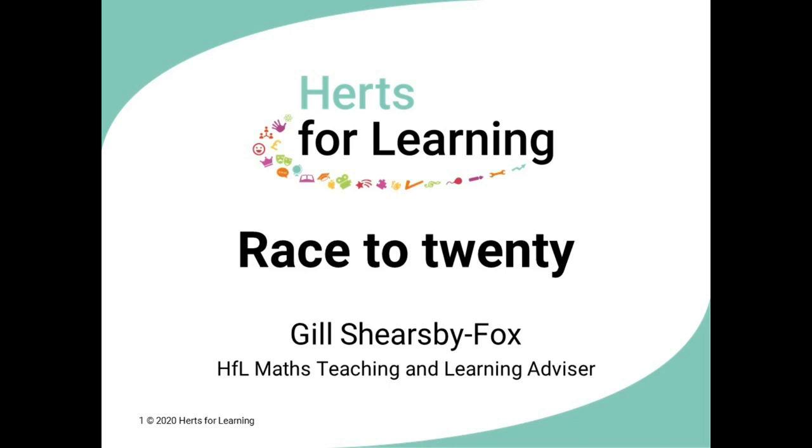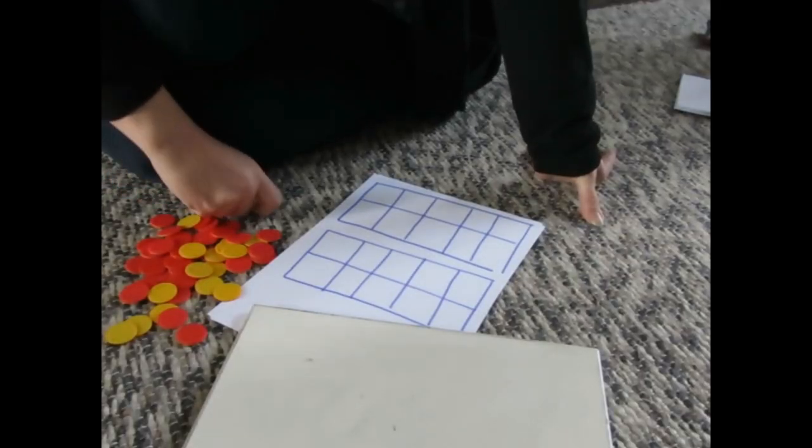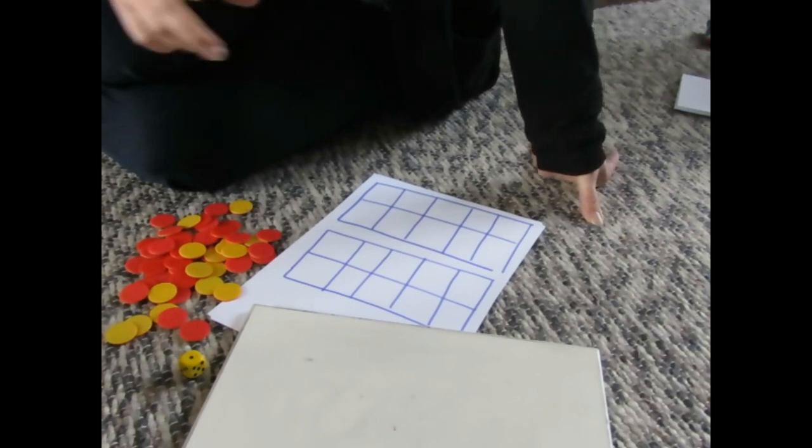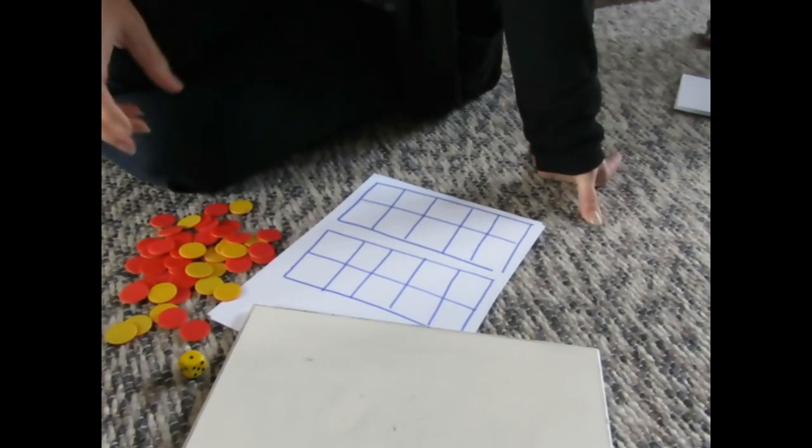Today's game is Race to 20. This is a great game for rehearsing adding lots of single-digit numbers and seeing how many you've got as you go along. We're going to play a game called Race to 20. It's a really simple game, really good just for rehearsing number bonds and such like that.